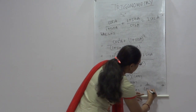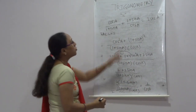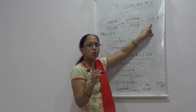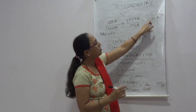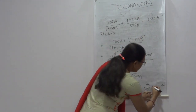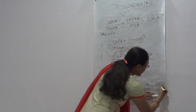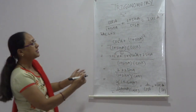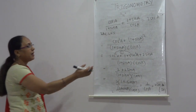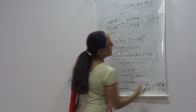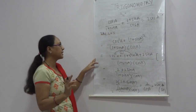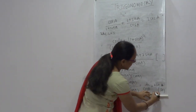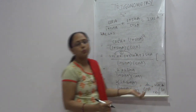After substitution the numerator becomes 1 + 1 + 2sinA = 2 + 2sinA. Taking 2 common: 2(1 + sinA) / [cosA(1 + sinA)]. The (1 + sinA) bracket cancels, leaving 2/cosA. Since 1/cosA = secA, this equals 2secA, which is our RHS. Hence proved.